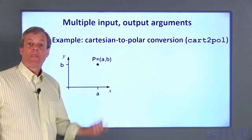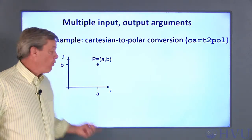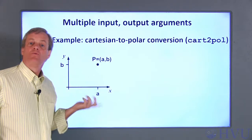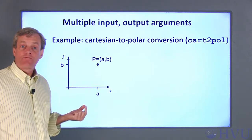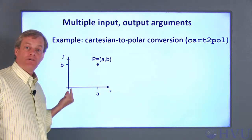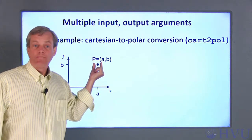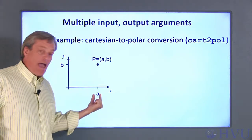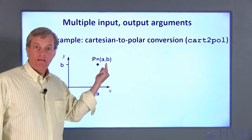Just to review, a point in two-dimensional space can be represented in several ways. One form is Cartesian coordinates, which correspond to our usual x-y axes. The distance from the origin in the x and y directions are represented as a pair of numbers. In our example, the point P is A units in the x direction and B units in the y direction.